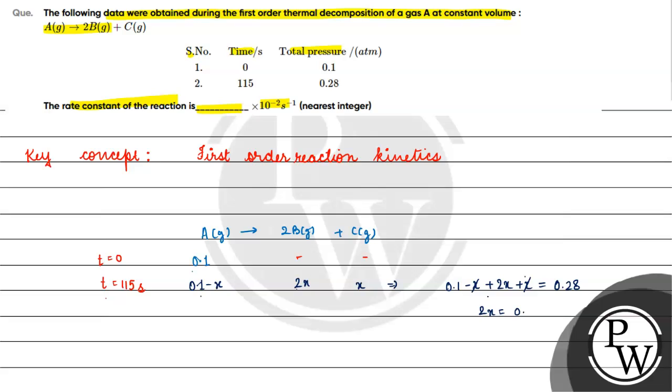Simplifying: 0.1 + 2x = 0.28. Solving this equation, we get 2x = 0.18, so x = 0.09.